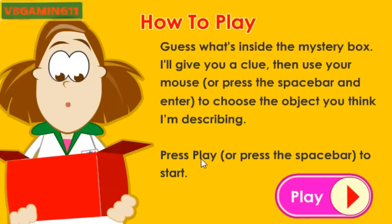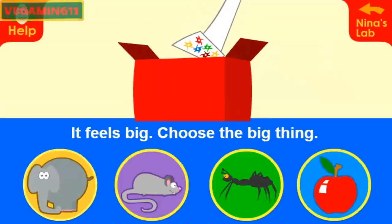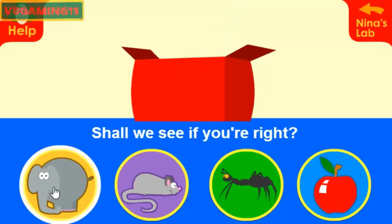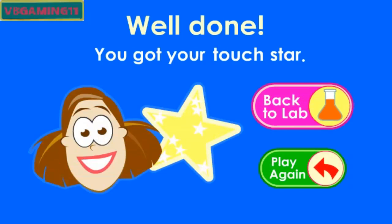Guess what's inside the mystery box. I'll give you a clue, then use your mouse or press the space bar and enter to choose the object you think I'm describing. Press play or press the space bar to start. It feels big — choose the big thing. Shall we see if you're right? Well done! You got your touch star.